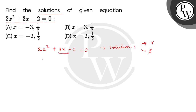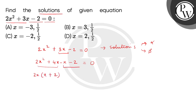इस middle term को split करेंगे. So, 2x square plus 4x minus x minus 2 equal to 0. अब first two terms में से 2x common लेंगे, this is x plus 2, और last two terms में से minus 1 common लेंगे.